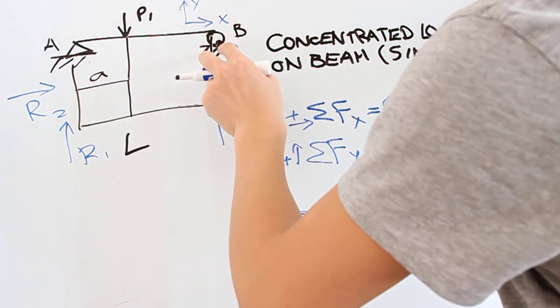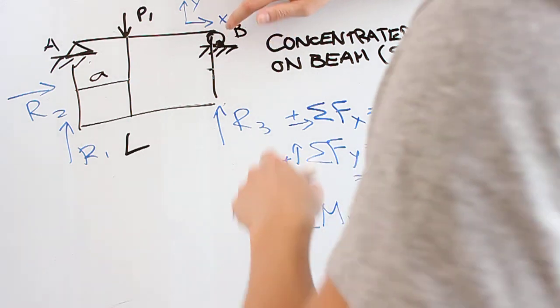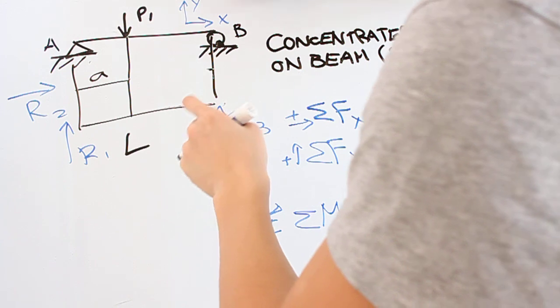And then we care about, around this point, what other forces in the body are giving me a sense of rotation. We know that we don't care about R3 because it's right on point B, so it's not going to produce any moment.